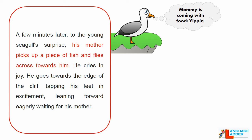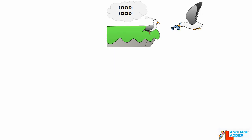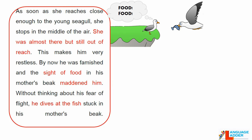A few minutes later, to the young seagull's surprise, his mother picks up a piece of fish and flies across towards him. He cries in joy and goes towards the edge of the cliff, tapping his feet in excitement and leaning forward eagerly waiting for his mother. As soon as she reaches close enough, she stops in the middle of the air — almost there but still out of reach. This makes him very restless. By now he was famished, and the sight of food in his mother's beak maddened him. So without thinking about his fear of flight, he dives at the fish stuck in his mother's beak.